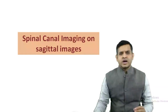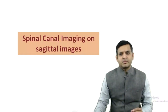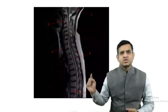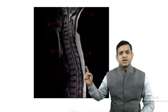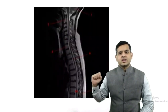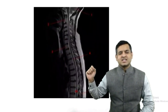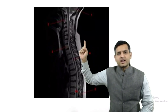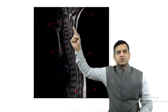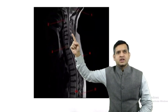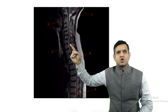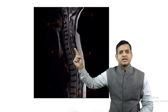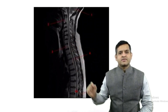In this video, I will talk about spinal cord imaging on sagittal scans. If you see this, this is a typical T2 weighted sagittal image of the cervical and thoracic spine where you could see the spinal cord is seen lined by the CSF.